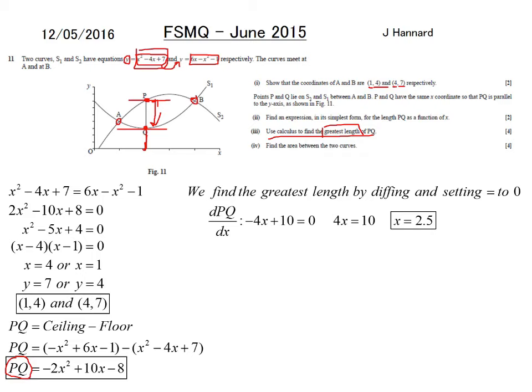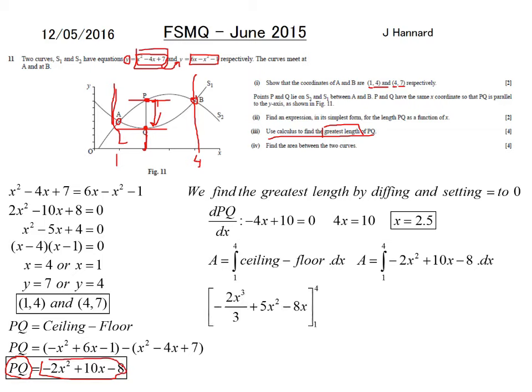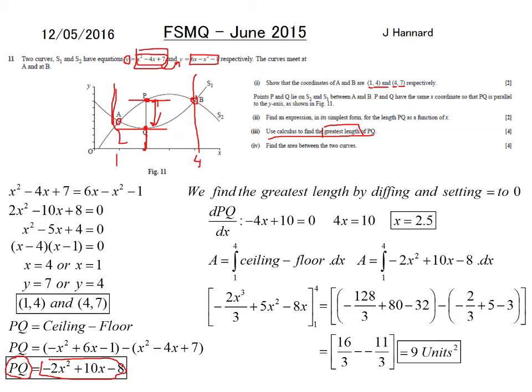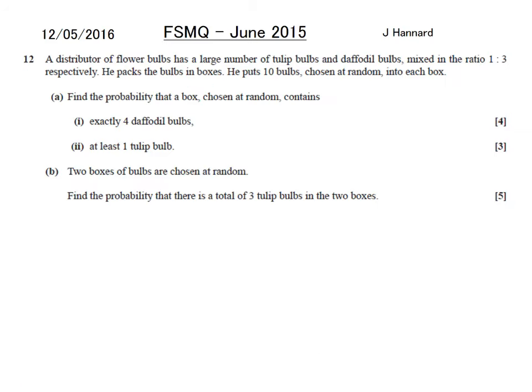Find the area between the two curves. We know the goalposts from the first question. That's at 4, that's at 1. Therefore, the area in between is the integration between 4 and 1 of the ceiling to the floor. Because that's the area between two curves. Which is that. Because that is the ceiling to the floor. It's a lovely flowing question, this. Which is that. Add 1 to the power. Divide by the new power. Shove your 4 through. Shove your 1 through. Take them off each other. You get that. And then, 9 units squared.